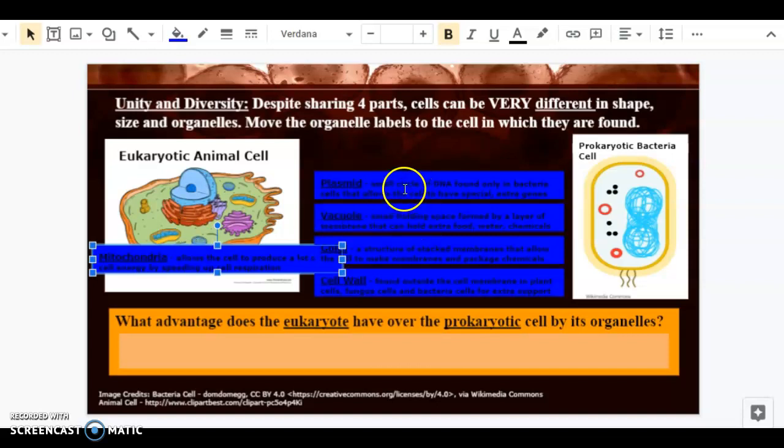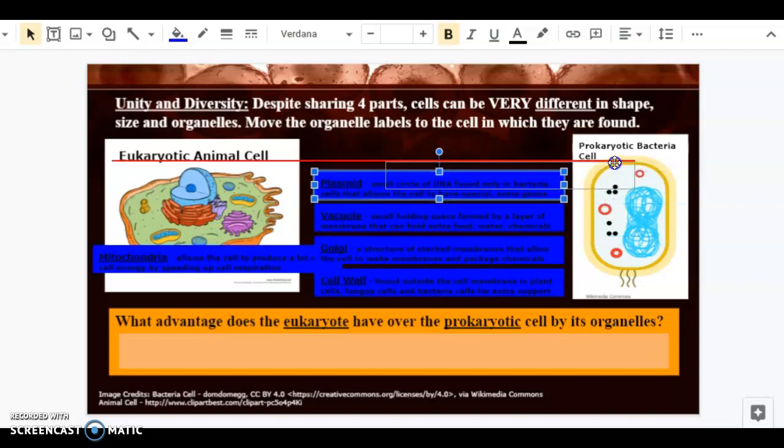Next, we have the plasmid, which is a small circle of DNA found only in bacteria cells. We clearly see this is the bacteria cell. So what is the small circle of DNA found there? Well, this one has three. They are the small red circles. I'll put that right beside the plasmid.